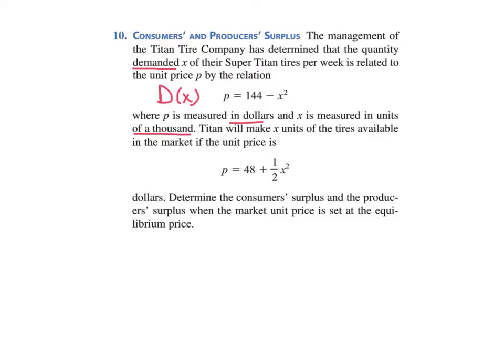Titan will make x units of tires available in the market if the unit price is p equals 48 plus one-half x squared. This is the supply function, which we'll use to compute the producer surplus. We're asked to determine the consumer surplus and the producer surplus when the market unit price is set at equilibrium price. That's the key to calculating these—we're going to set these two functions equal to each other.